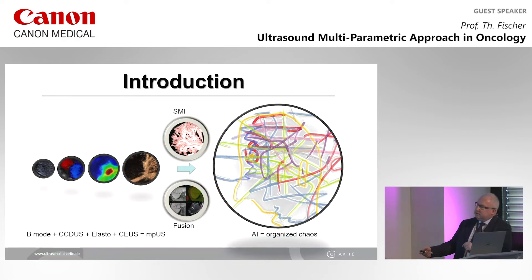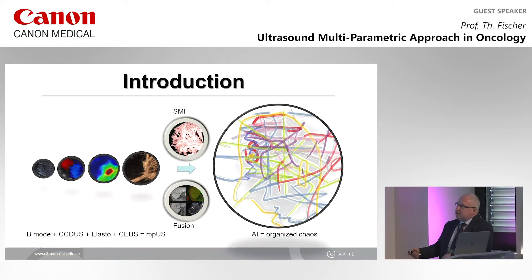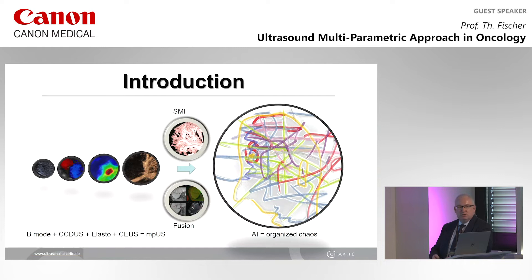I think that's really clear. Focusing on good B-mode quality, including color-coded duplex ultrasound for Doppler evaluation, elastography, as well as contrast-enhanced ultrasound. Unique for Canon is SMI as a new brand in Doppler technology, and last but not least, Image Fusion, where we can offer the full possibility of ultrasound. At the ECR meeting, a lot of AI stuff is ongoing. In my opinion, at the moment, this is a little bit organized chaos, and we will see what happens for ultrasound in the future.